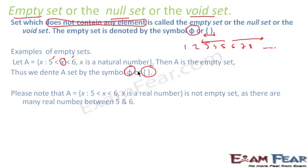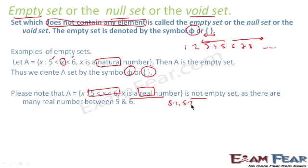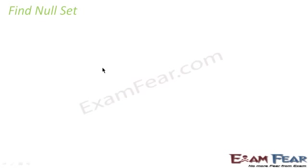Please note: for the same condition x greater than 5 and less than 6, if x is a real number instead of a natural number, this would not be an empty set — because there are infinitely many real numbers between 5 and 6, such as 5.1, 5.2, 5.3, up to 5.9 and beyond. So always check the type of x — whether it is a natural number, real number, rational number, or integer — as that impacts the result significantly.